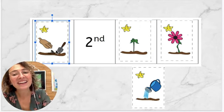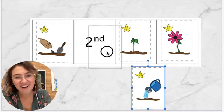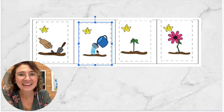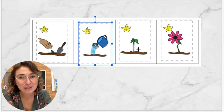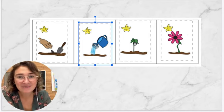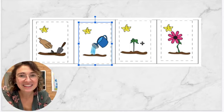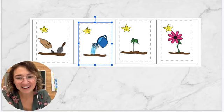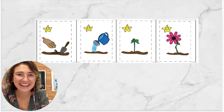Then we water the seed. And it becomes a small plant with a stem and leaves. And then a flower. Just like this.